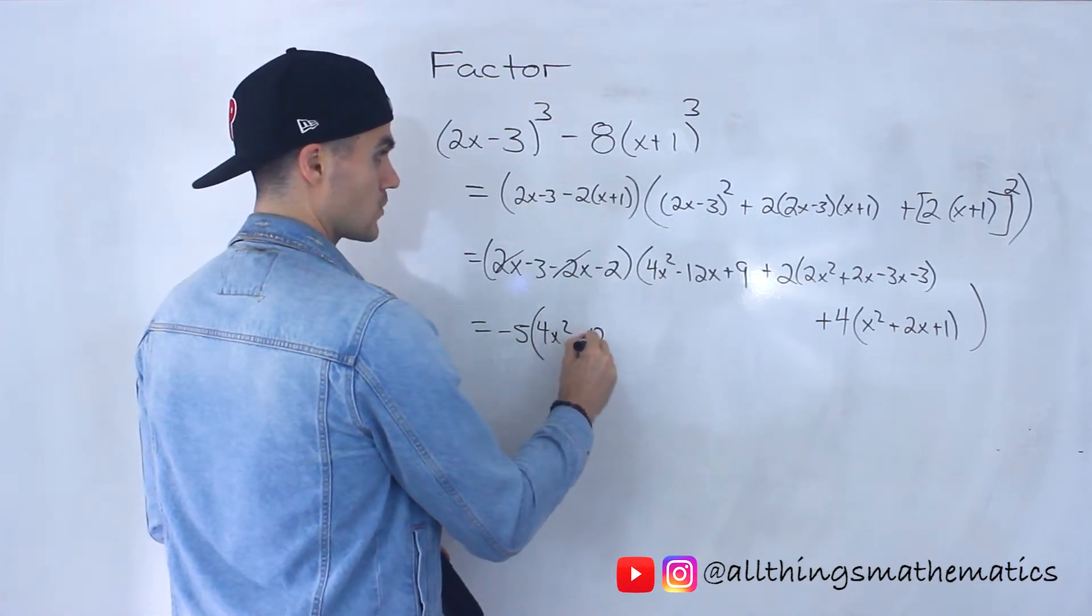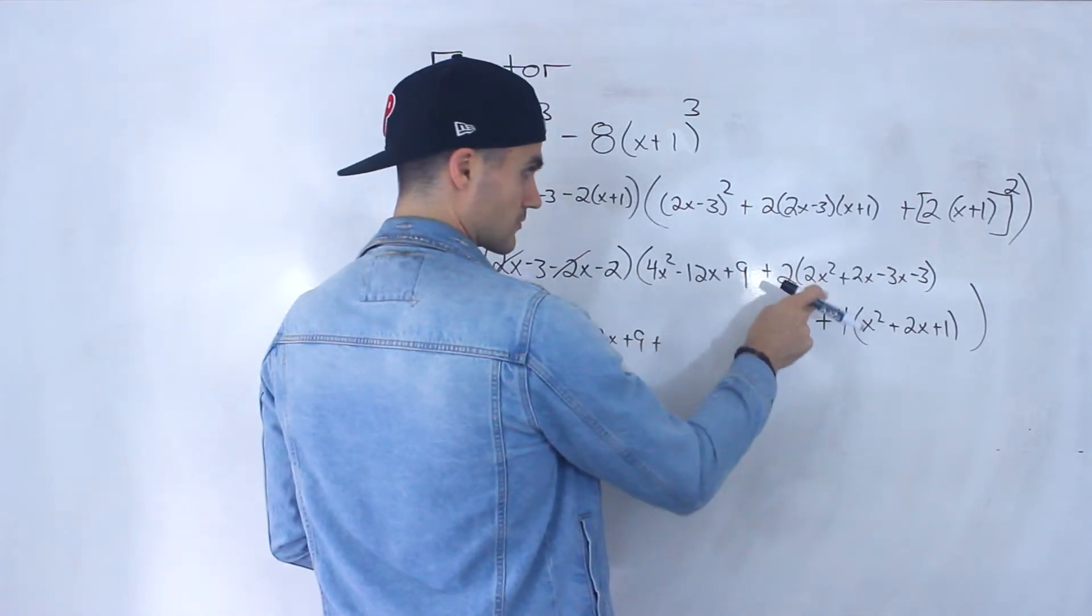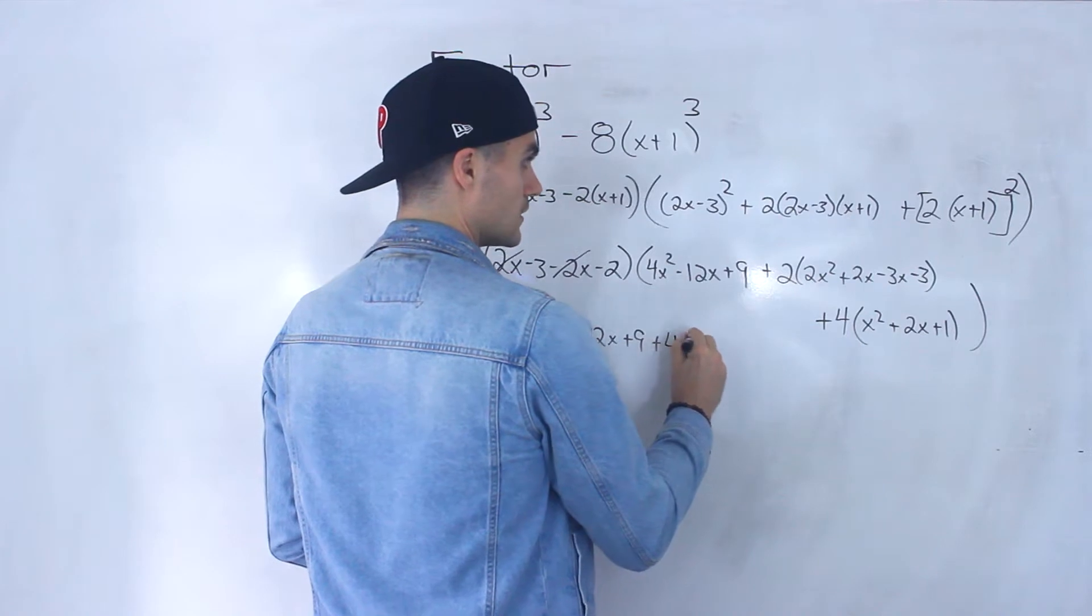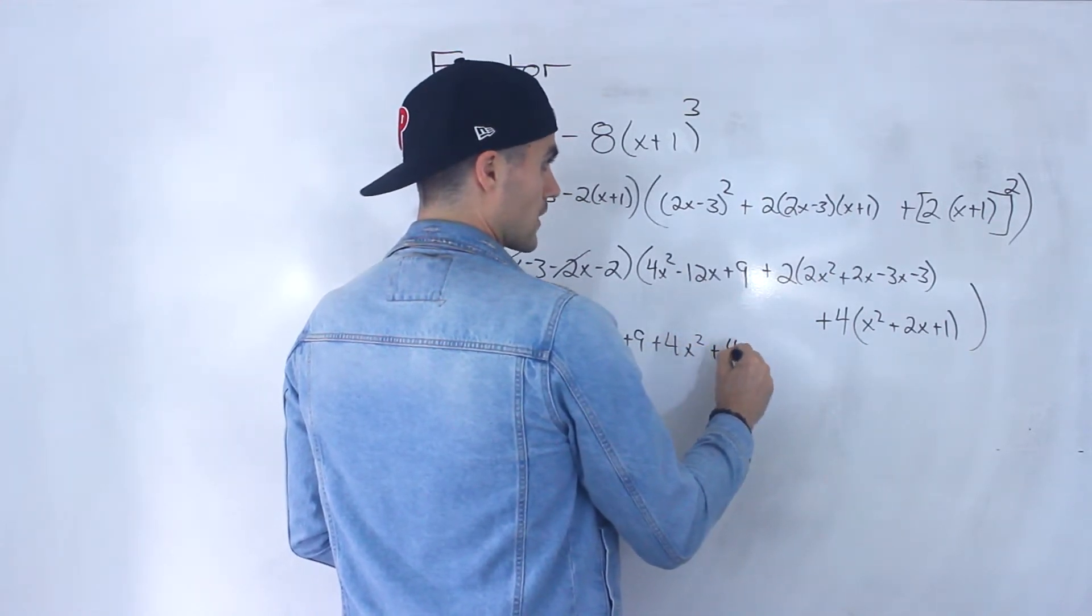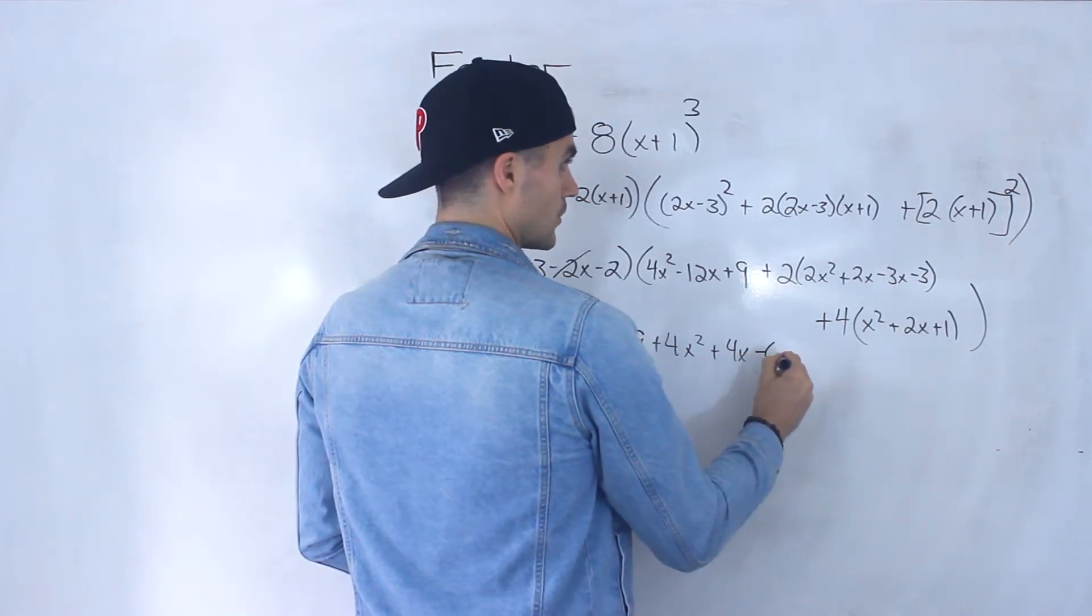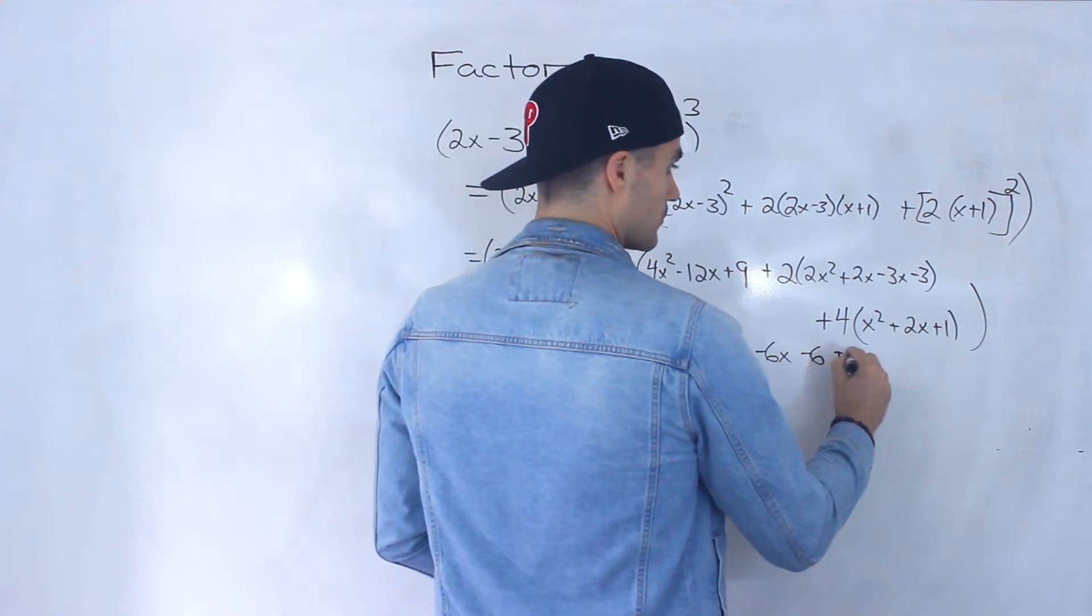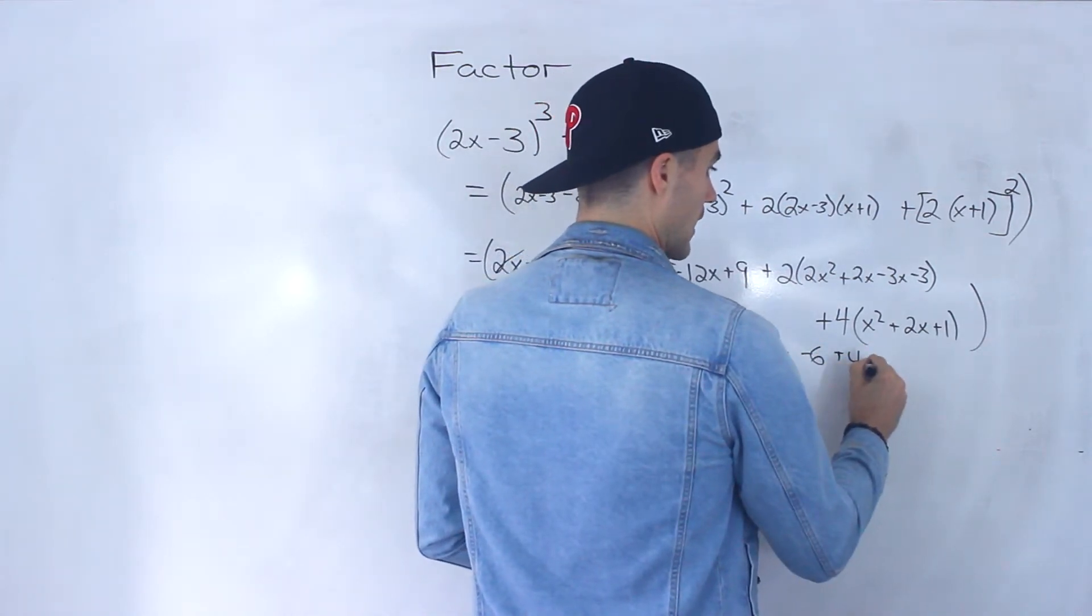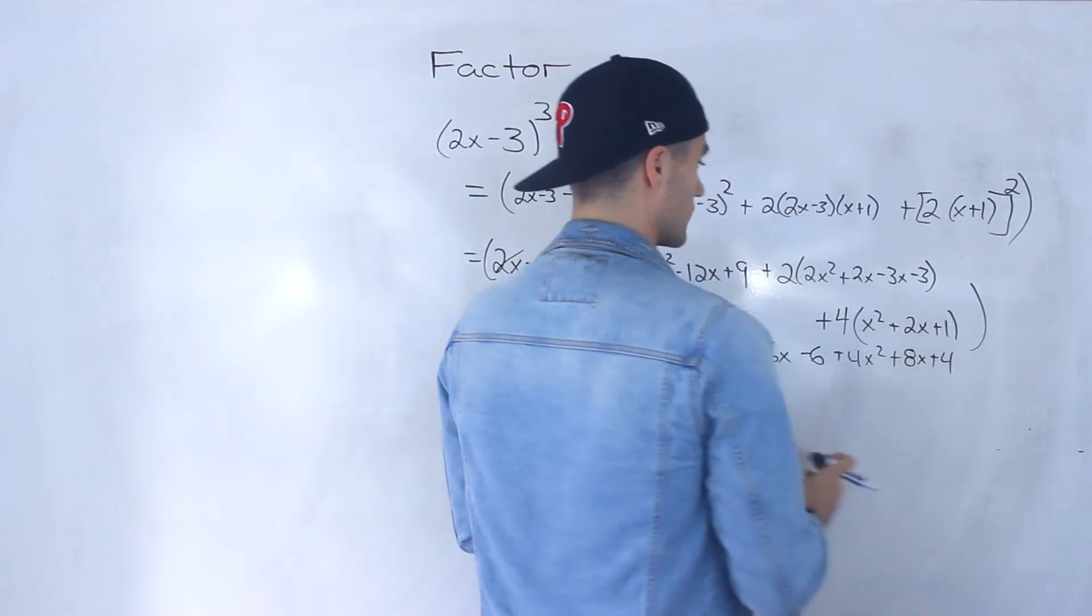And then let's simplify all of this here. We'd have 4x²-12x+9, plus distribute the 2 inside the bracket, 4x. We could have simplified here, but I'm just going to distribute the 2 to both of those like that. And then over here, we'd have plus 4x² + 8x + 4, like that.